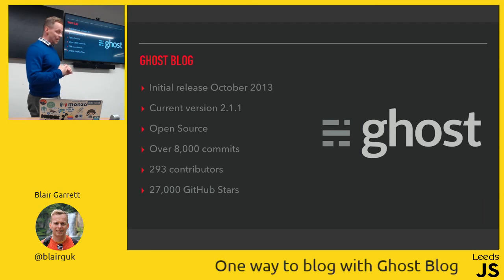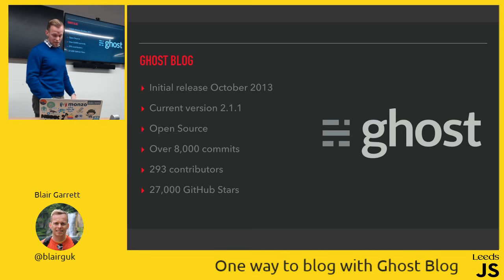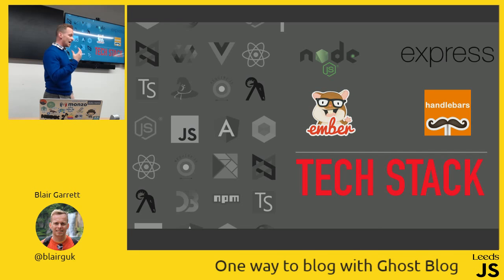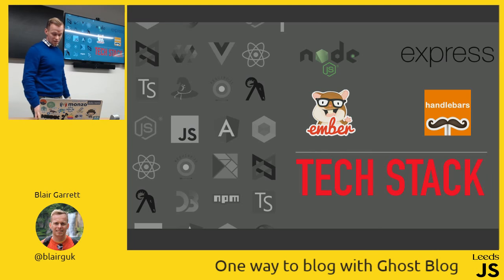Ghost Blog had its initial release in 2013, and the current version is 2.1.1. It's all open source with 8,000 commits, 290 contributors, and 27,000 stars — slightly more popular than Gatsby or Hexo. The admin UI used for creating blog posts is written in Ember.js, and the back end is a Node.js Express application using Handlebars for rendering articles.